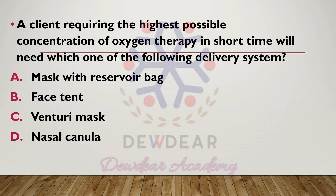A client requiring the highest possible concentration of oxygen therapy in a short time will need which of the following delivery systems? Options are: mask with reservoir bag, face tent, Venturi mask, nasal cannula. The answer is option A — mask with reservoir bag.